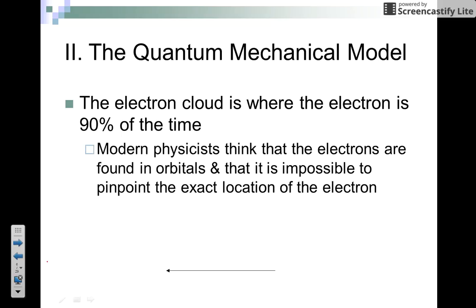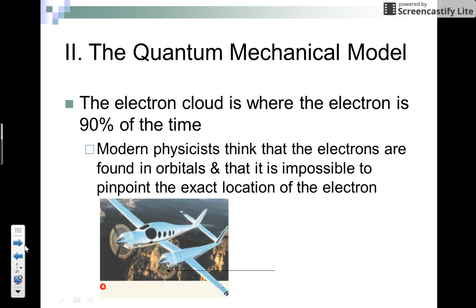With 90% probability we can locate the electron within the electron cloud with our quantum numbers. I think of the quantum numbers as the electron's address. We're going to learn how to find the address of an electron in this chapter. Modern physicists believe the electrons are found in orbitals, and it's impossible to pinpoint the exact location 100% of the time, but with 90% probability we can.